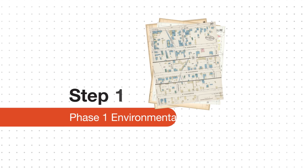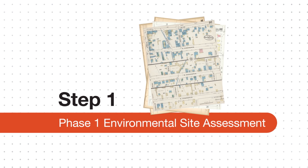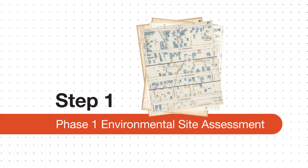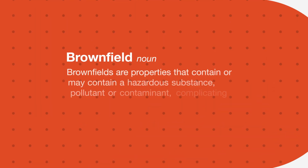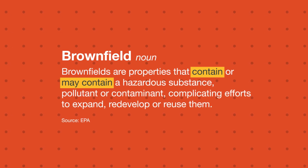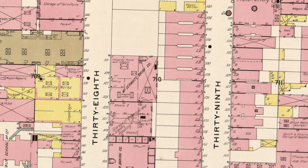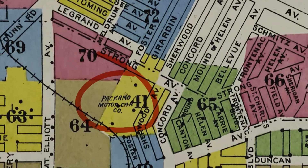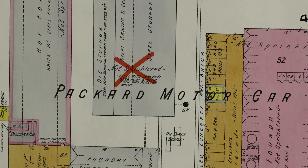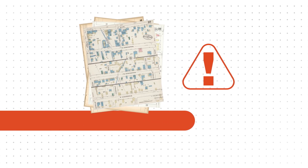First, conduct a Phase I environmental site assessment to determine if previous activities on the site could indicate contamination. The definition of brownfield includes both confirmed and potential contamination. For example, reviewing ownership and environmental records of an abandoned facility might indicate proper storage and disposal of hazardous substances, and the site needs no remediation.